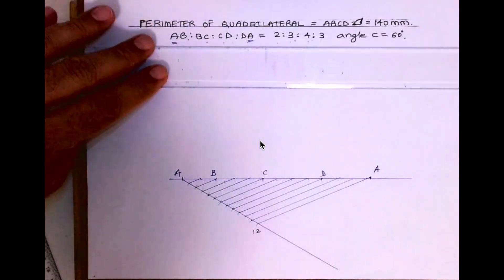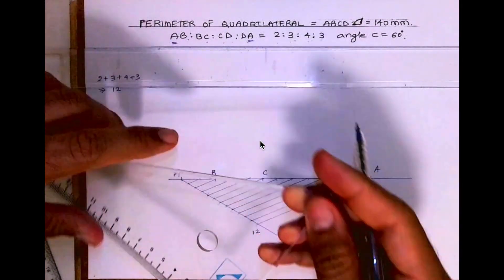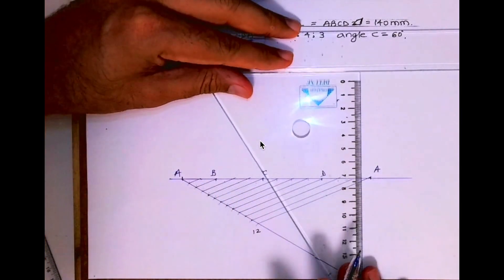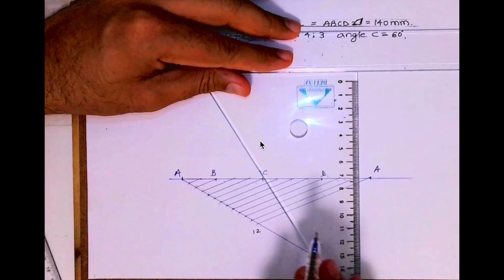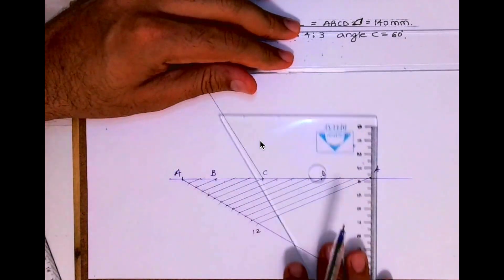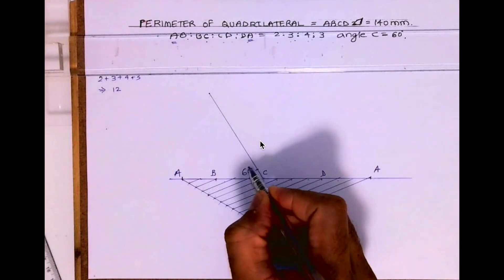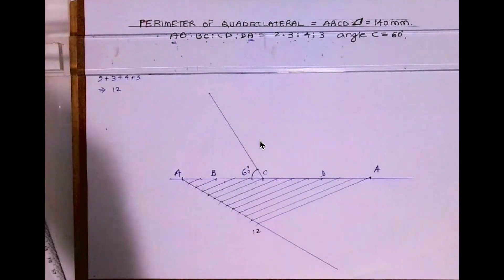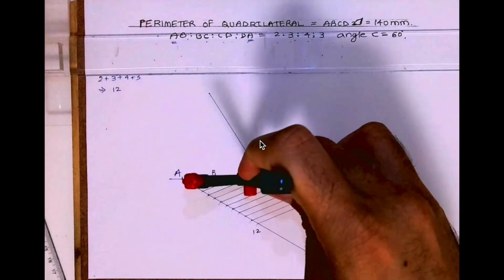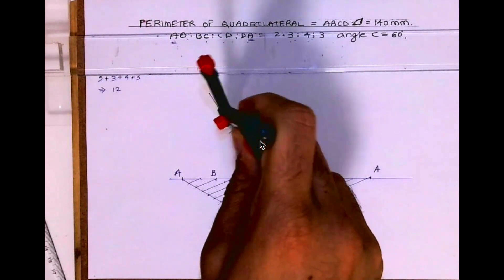Angle C is 60 degrees. So draw 60 degrees at C, and on that line I have to mark CD. From C we'll cut on this line and we'll get point D.